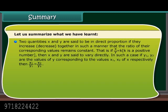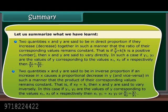Two quantities X and Y are said to be in inverse proportion if an increase in X causes a proportional decrease in Y, and vice versa, in such a manner that the product of their corresponding values remains constant. That is, if X × Y = K, then X and Y are said to vary inversely. In this case, if Y₁ and Y₂ are values of Y corresponding to values X₁ and X₂ of X, then X₁Y₁ = X₂Y₂, or X₁/X₂ = Y₂/Y₁.